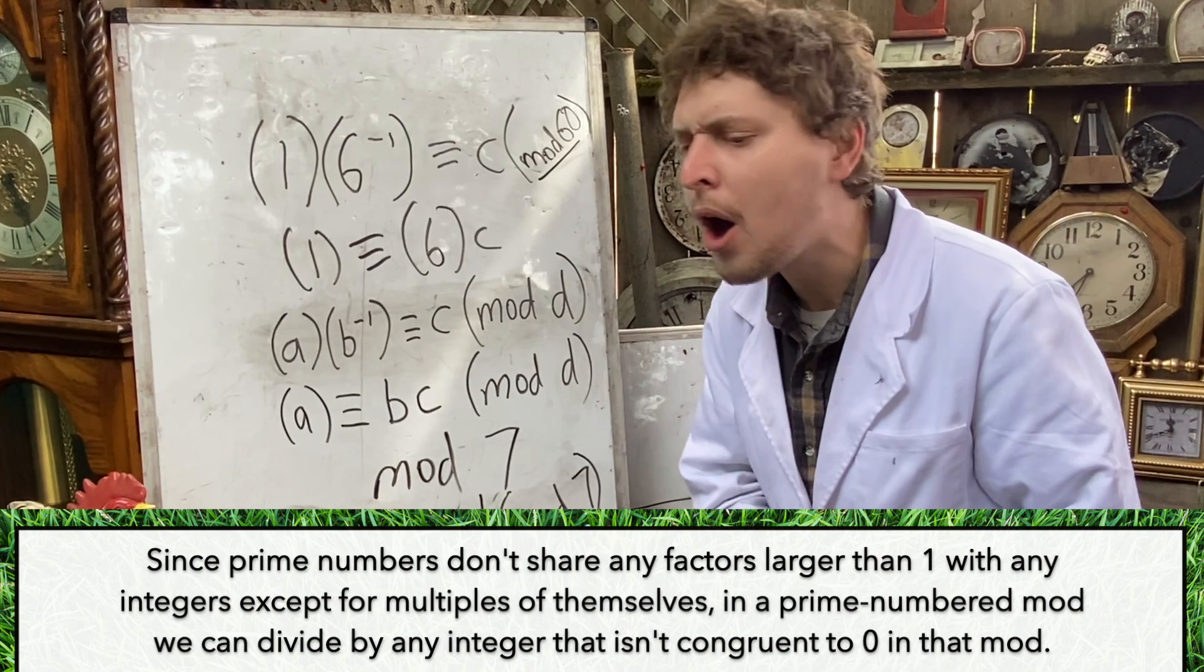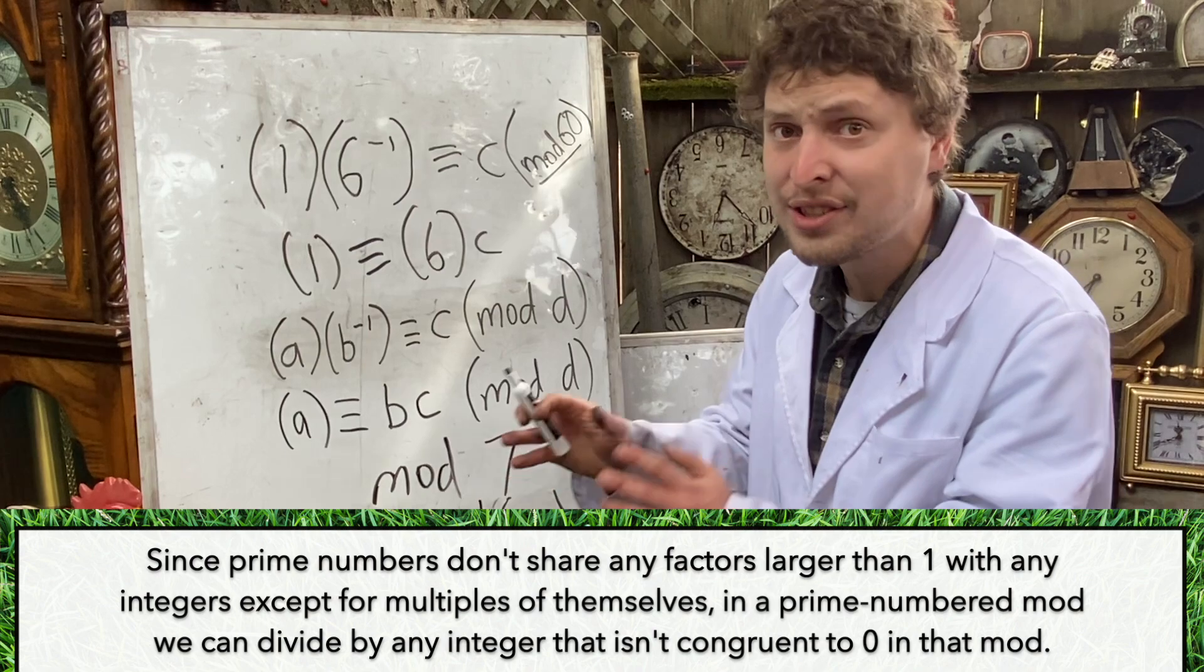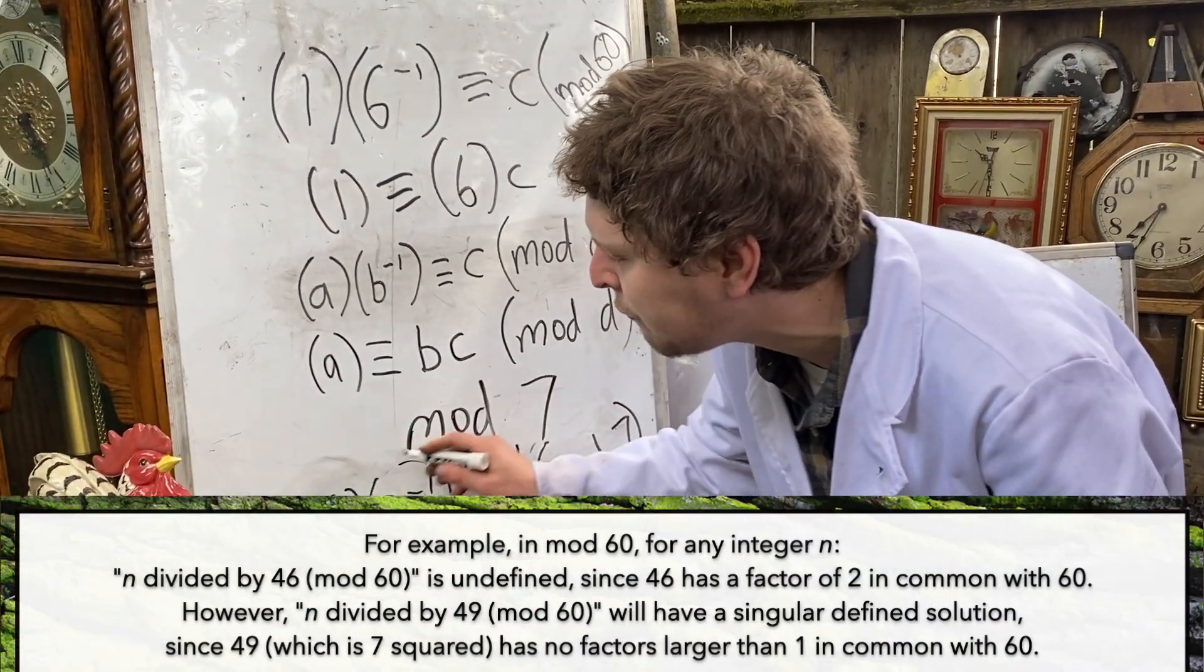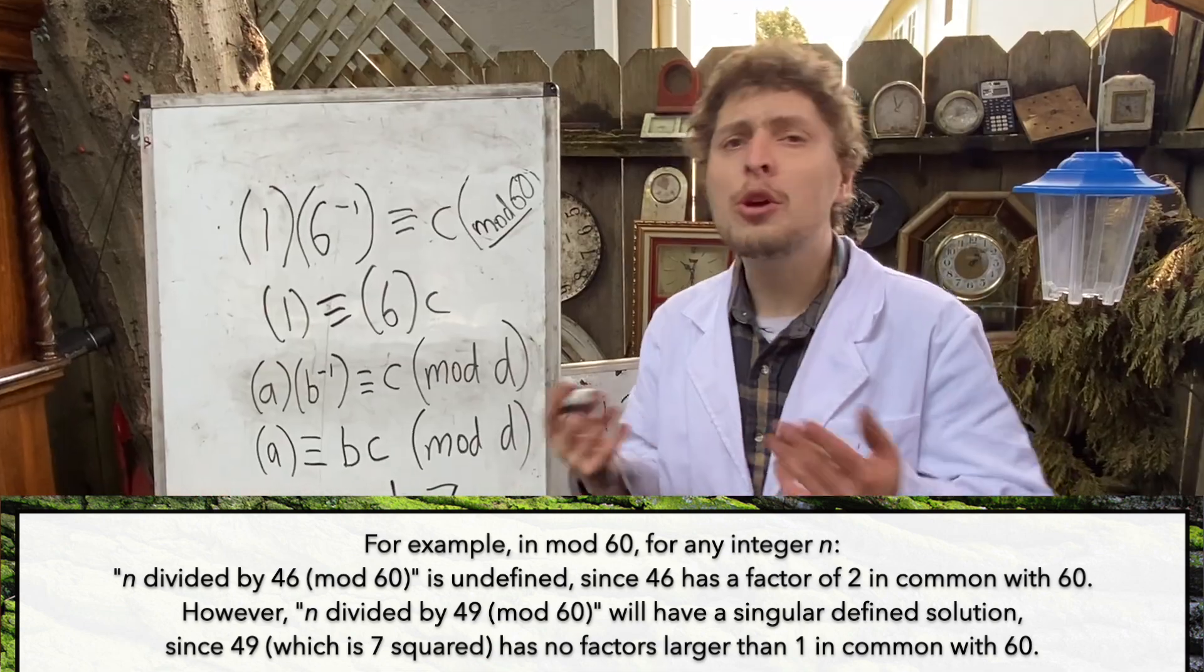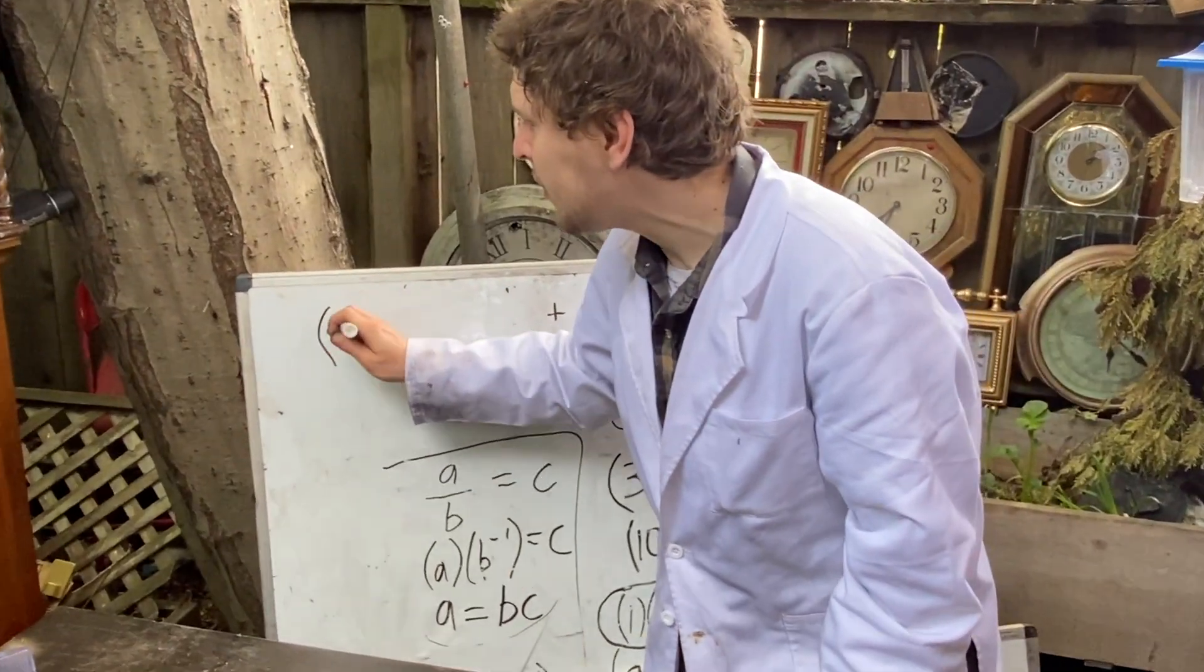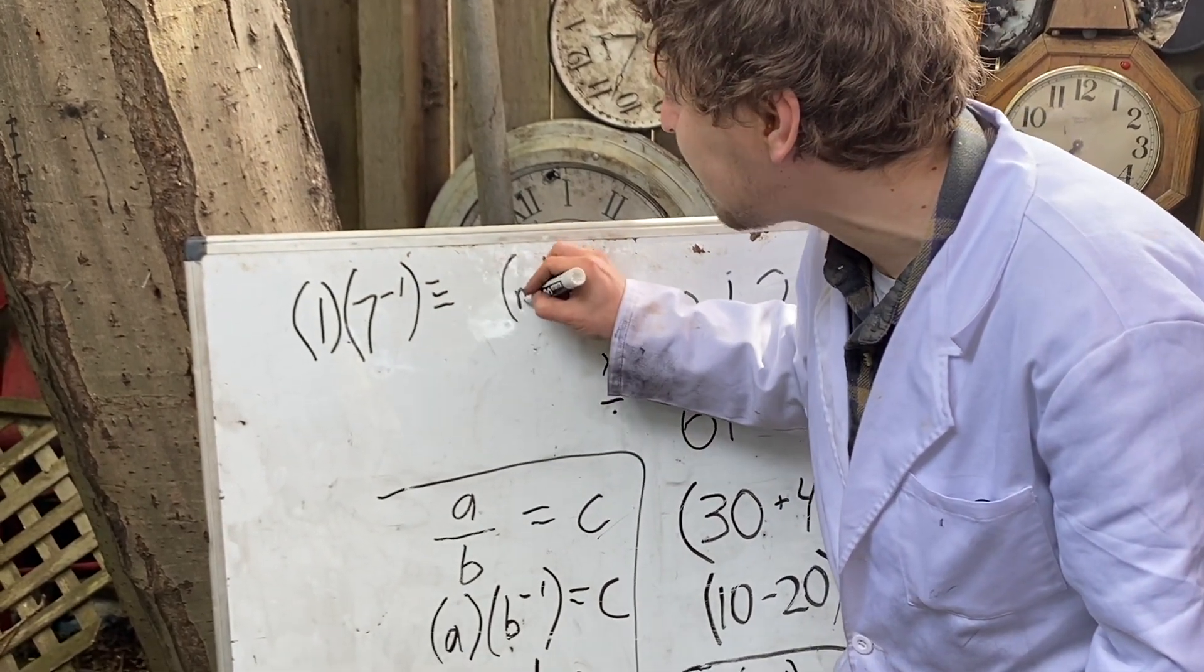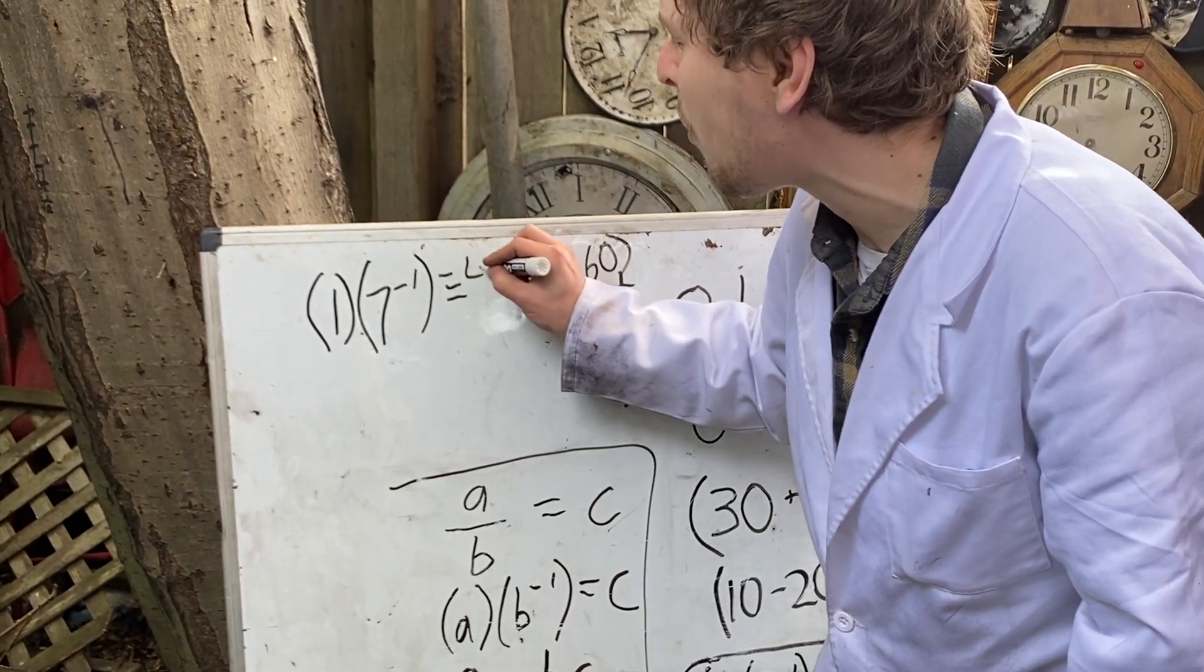In a prime mod, we can divide by any number that's not congruent to 0. Whereas in a mod like mod 60, we can only divide when the numbers we're dividing by are co-prime to the mod number. So that explains why 1 divided by 7 in this modular way had a solution in mod 60. But why was that solution 43?